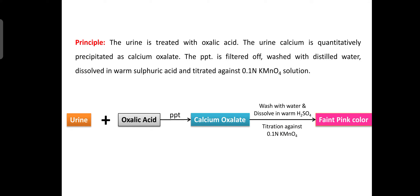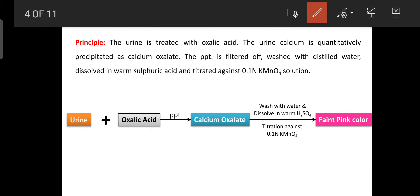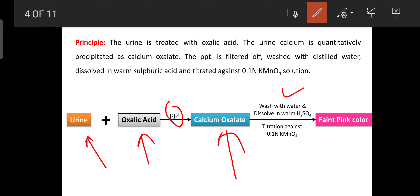The principle of estimation of calcium in urine is based on a precipitation type of reaction. Urine is treated with oxalic acid, and a white precipitate forms due to the formation of calcium oxalate by reaction between urine and oxalic acid. This precipitate of calcium oxalate is then washed with water.